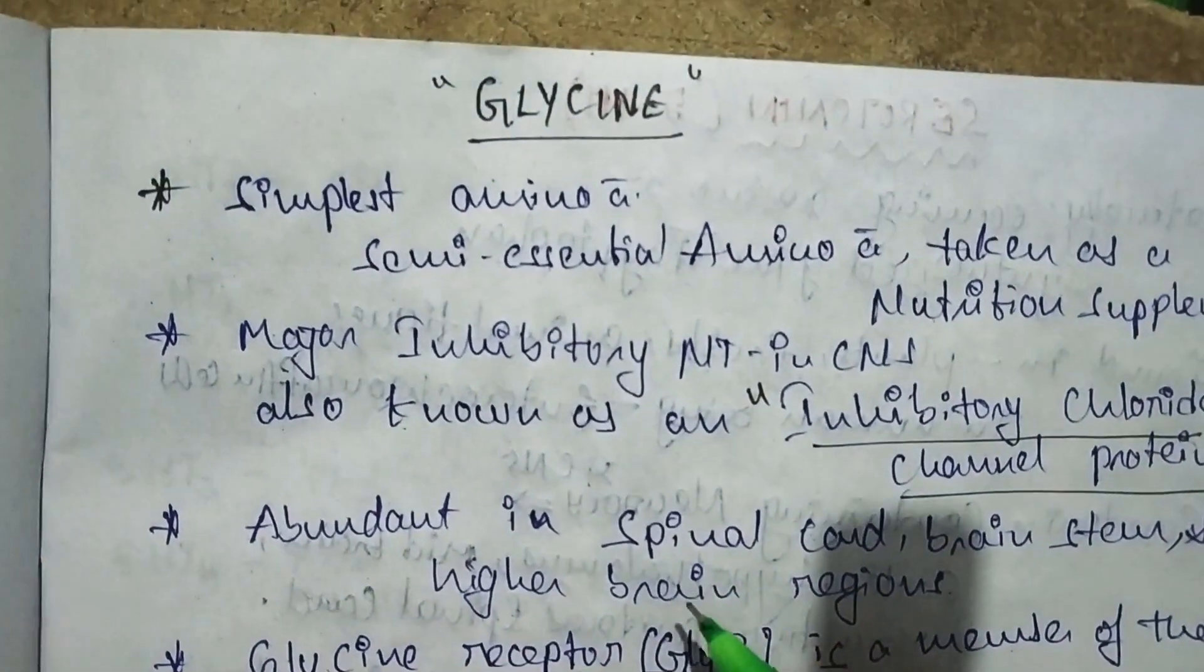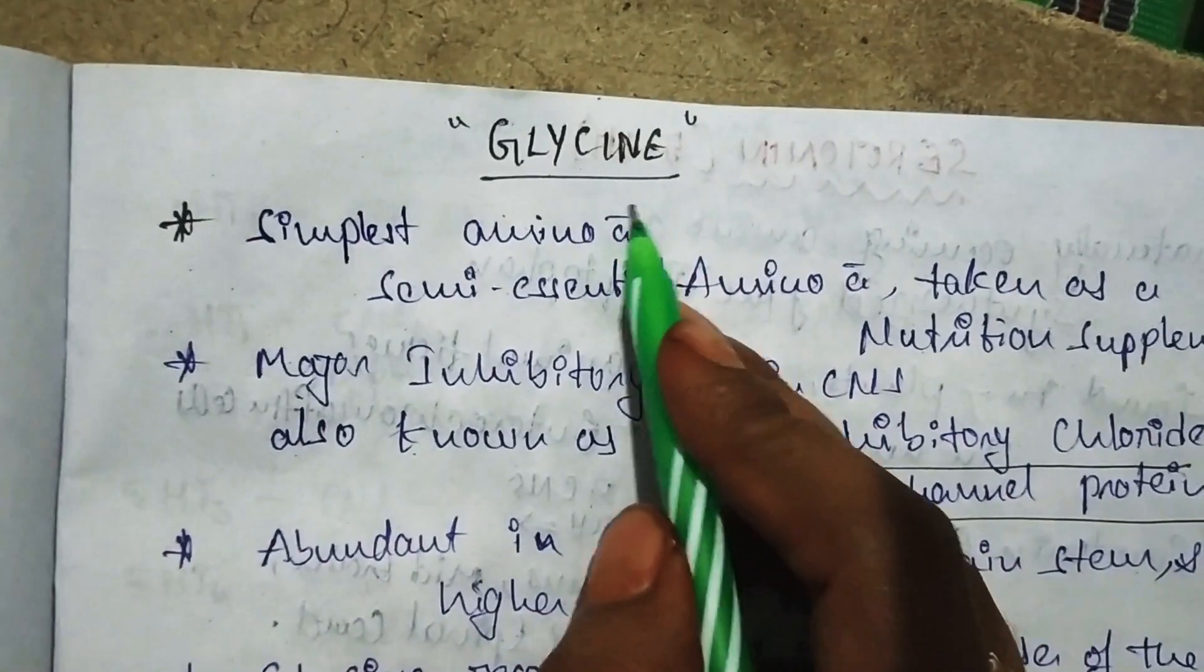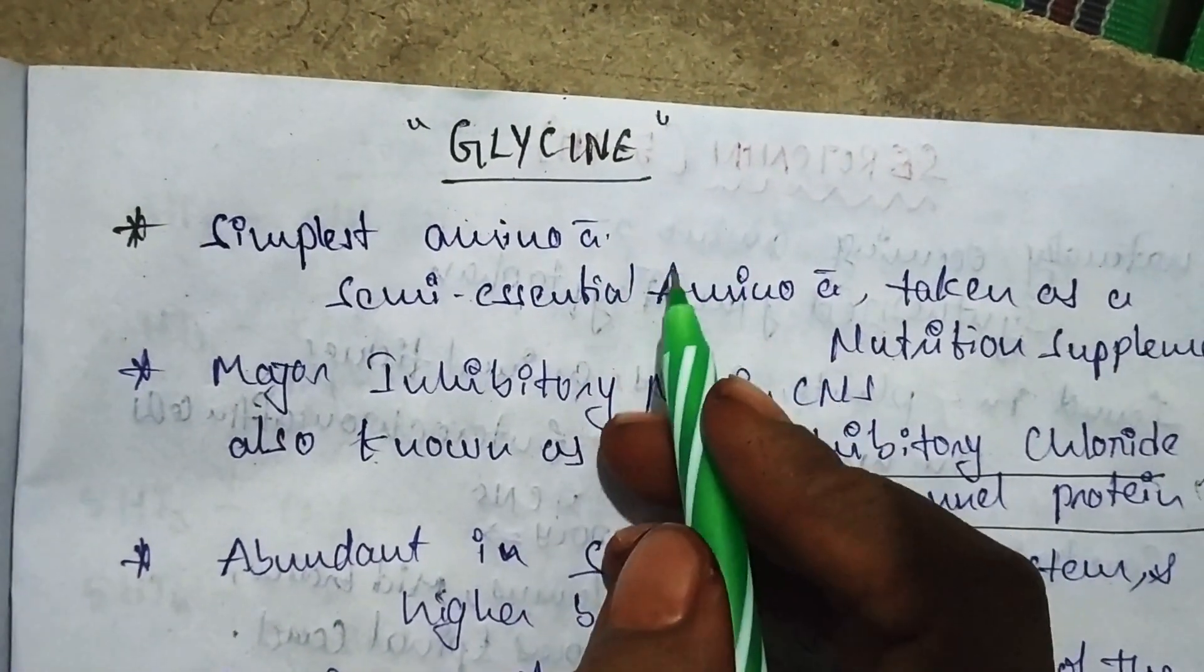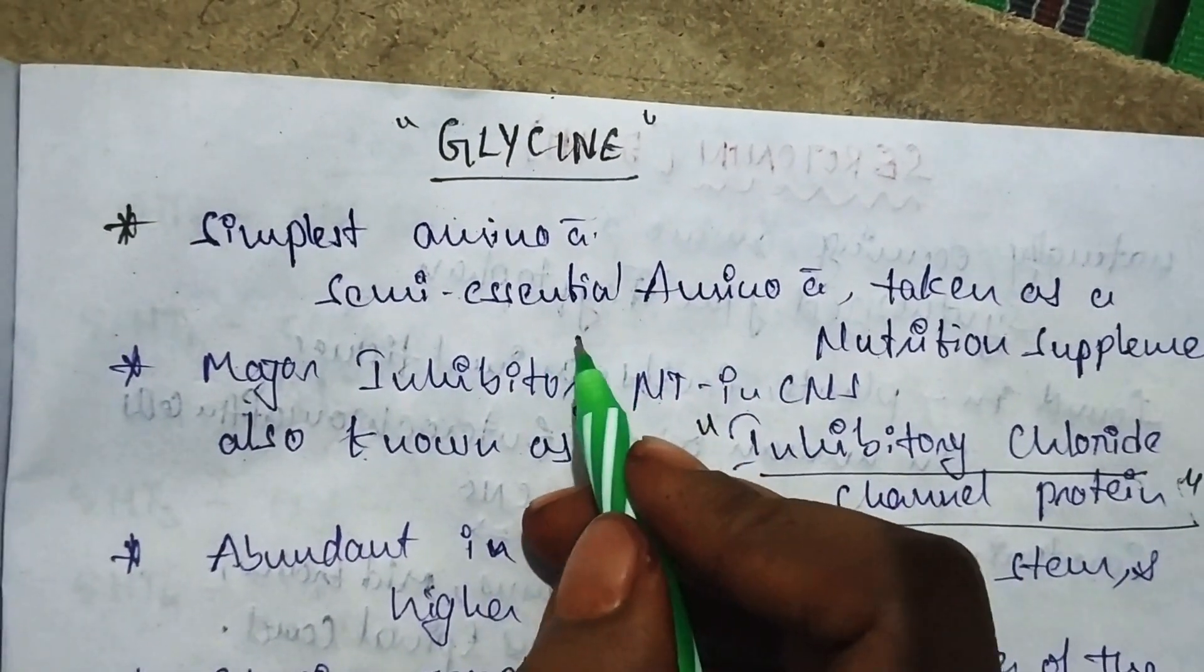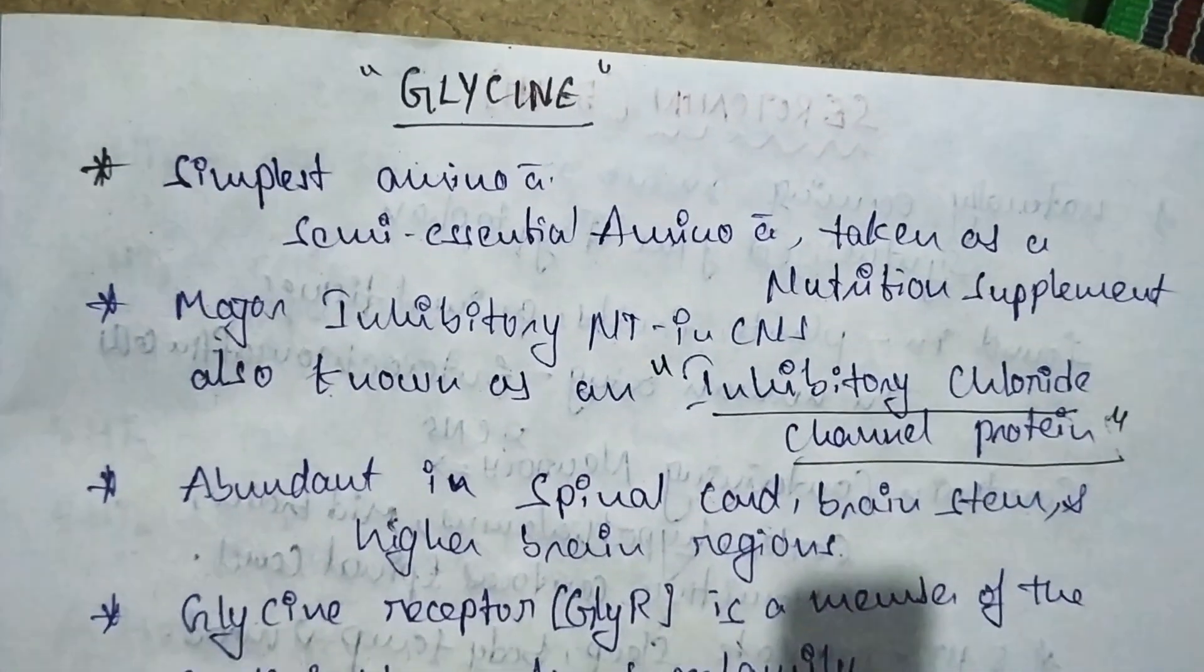Hello guys, today's topic is about neurotransmitters. One more neurotransmitter is glycine. Glycine is a semi-essential amino acid taken as a nutrition supplement.